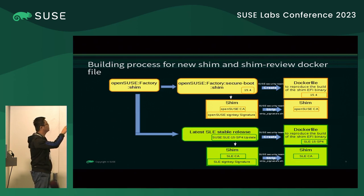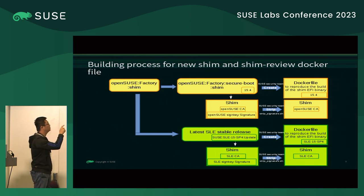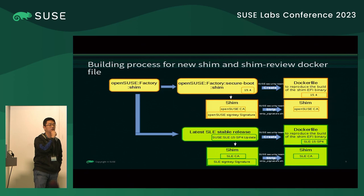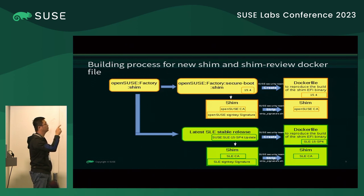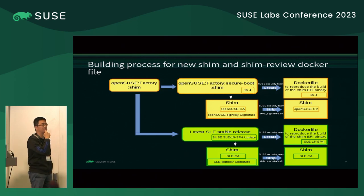We always build from Factory in the SHIM package. But because Factory isn't always stable — the toolchain or objcopy may change — we need a stable base to build our binary and also the Dockerfile. So we created a sub-project under Factory called 'secure-boot' or 'secure dashboard', with one SHIM package, pinning the 15.4 base repo. So our SHIM binary for Tumbleweed is built based on 15.4, not the real Factory.